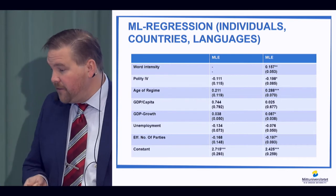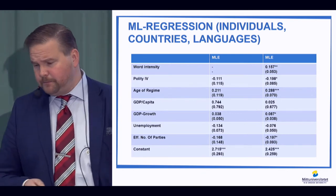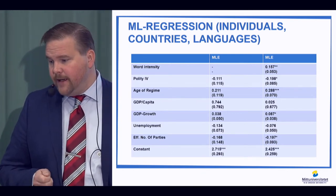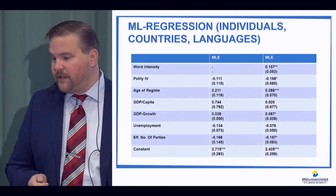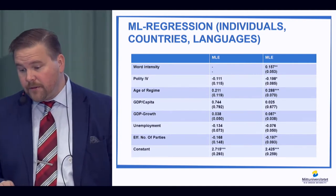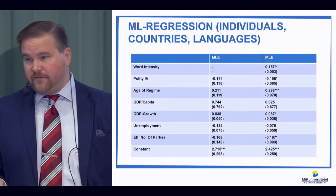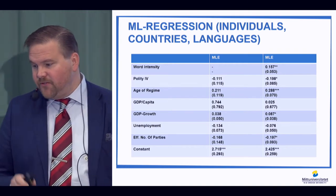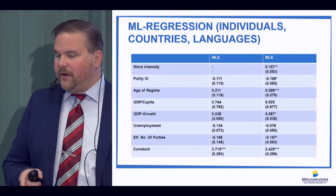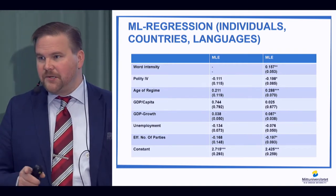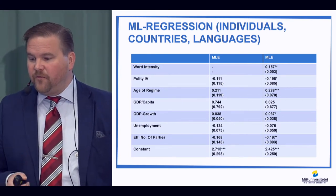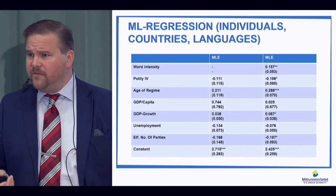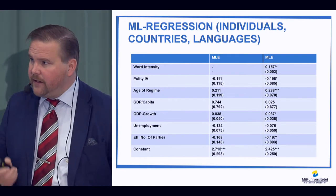More authoritarian states show less satisfaction. Consolidation of regime works now, as do GDP growth and the effective number of parties. Hopefully this very simple measure can be one way forward to account for and improve accuracy and validity in already collected data.